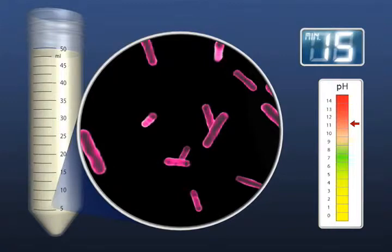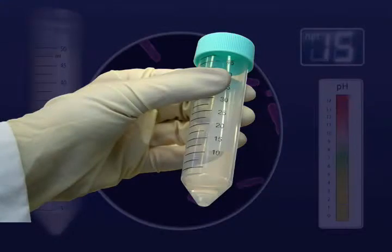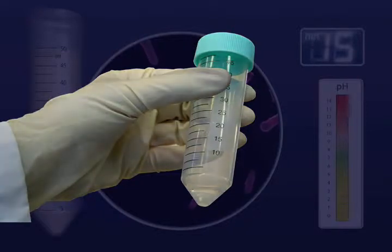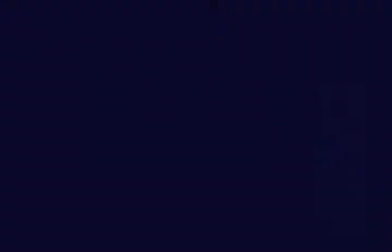To further compound the problem, laboratories have traditionally used this same M15 phosphate buffer saline or water to resuspend their sample after centrifugation. This leaves the sample with a final, highly variable pH that can lead to further organism die-off and may cause false positive results in sensitive automated detection equipment.